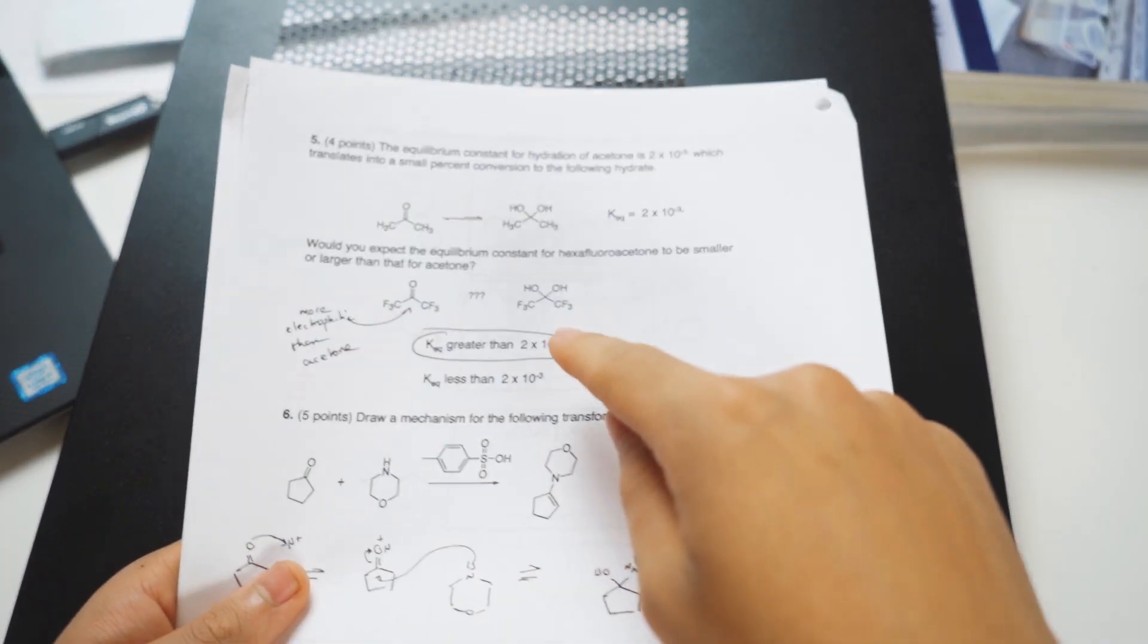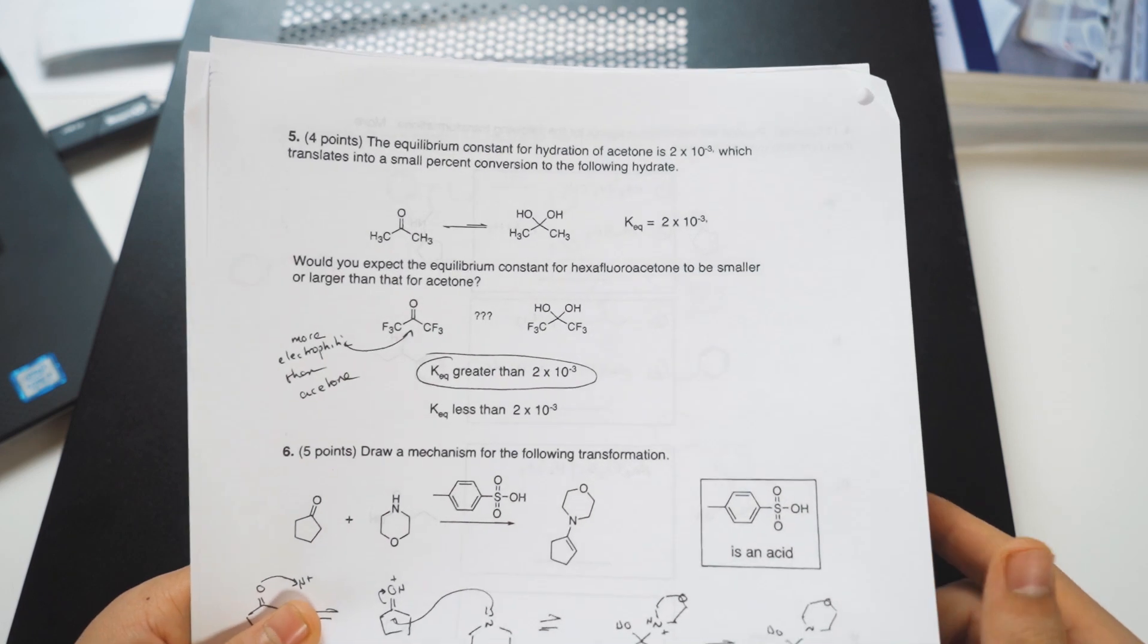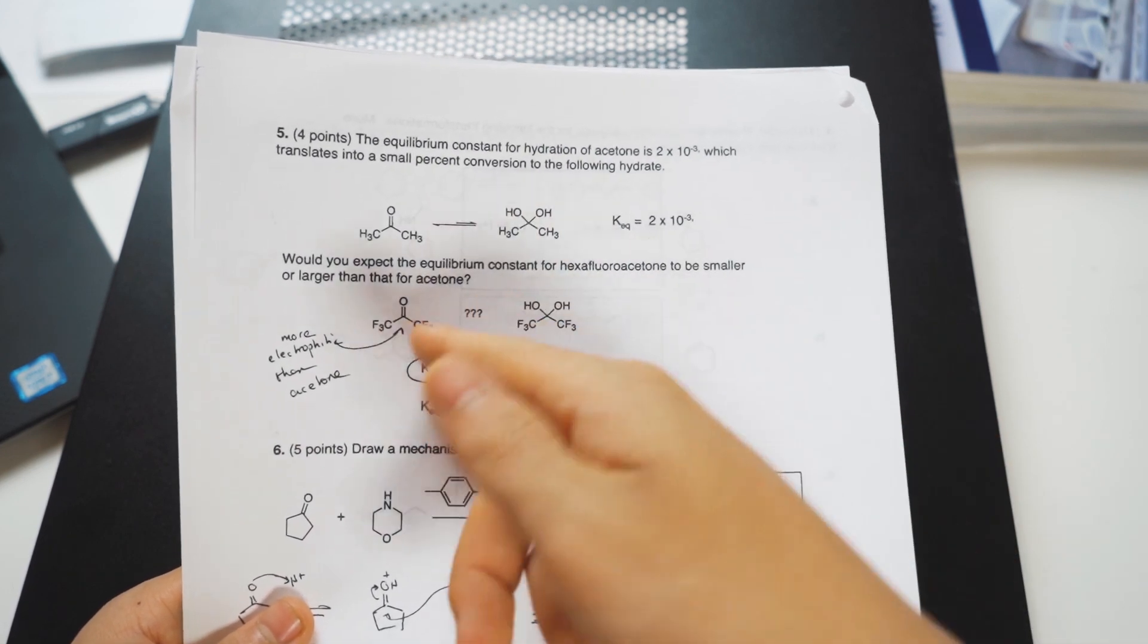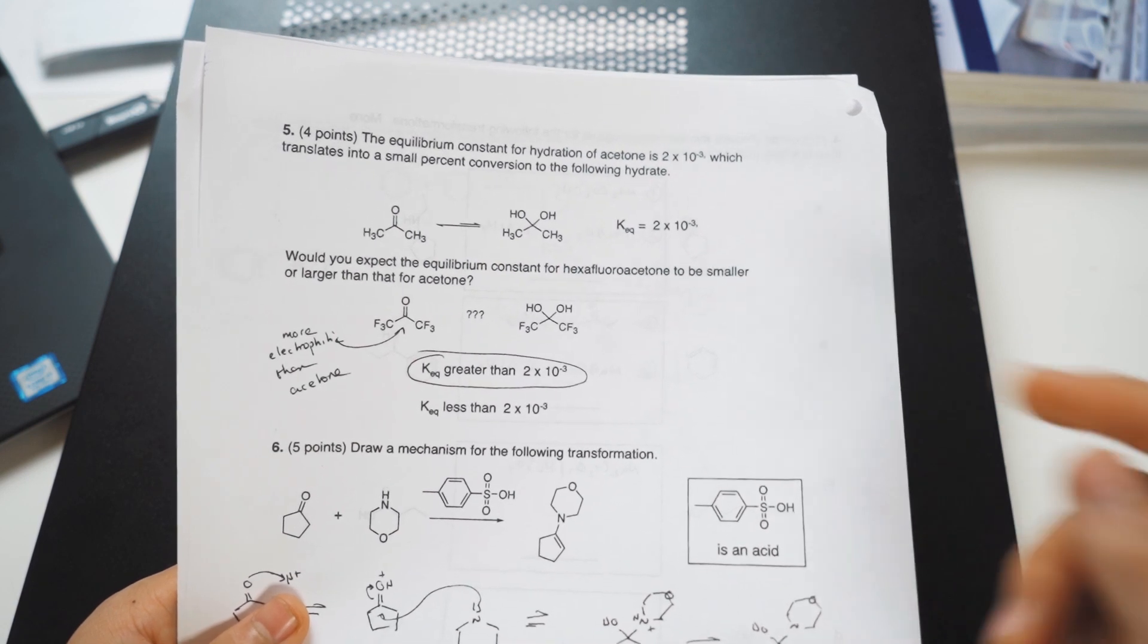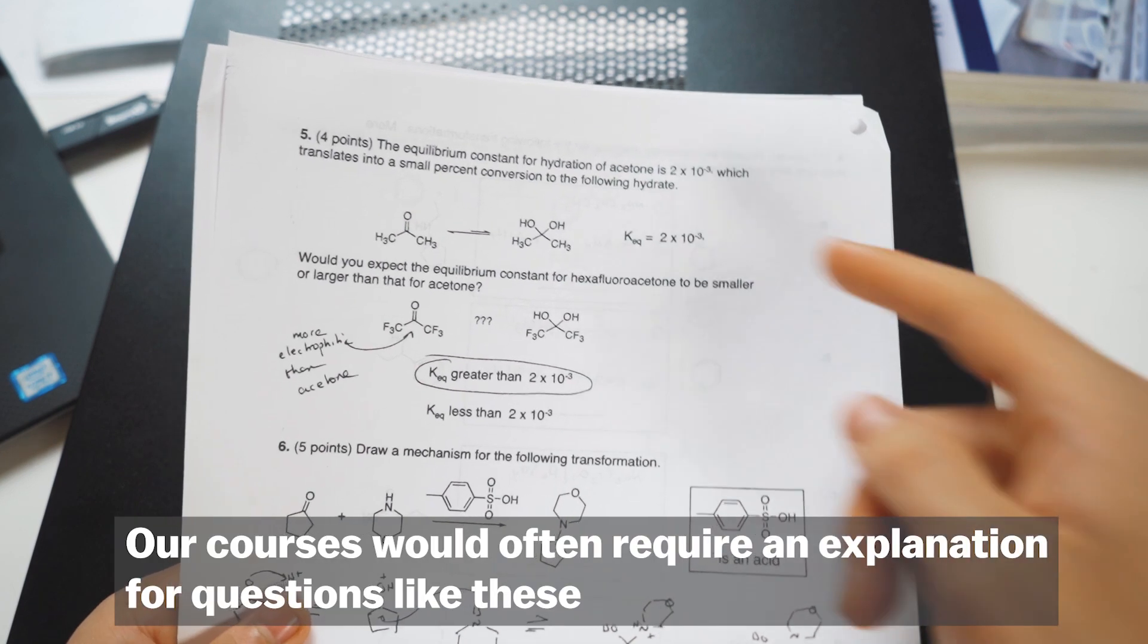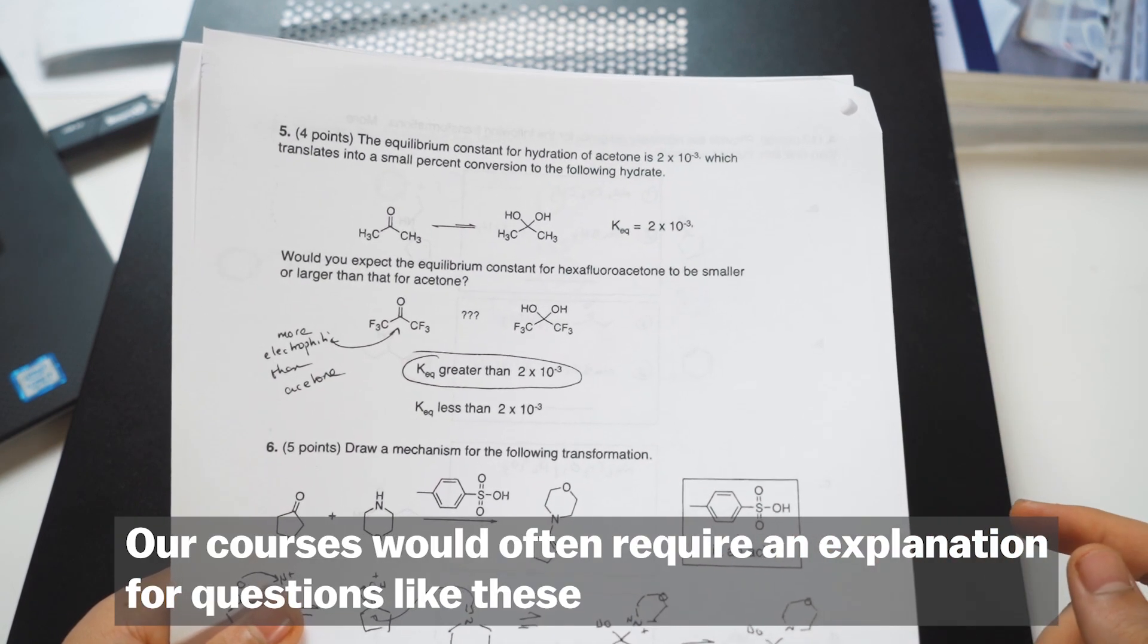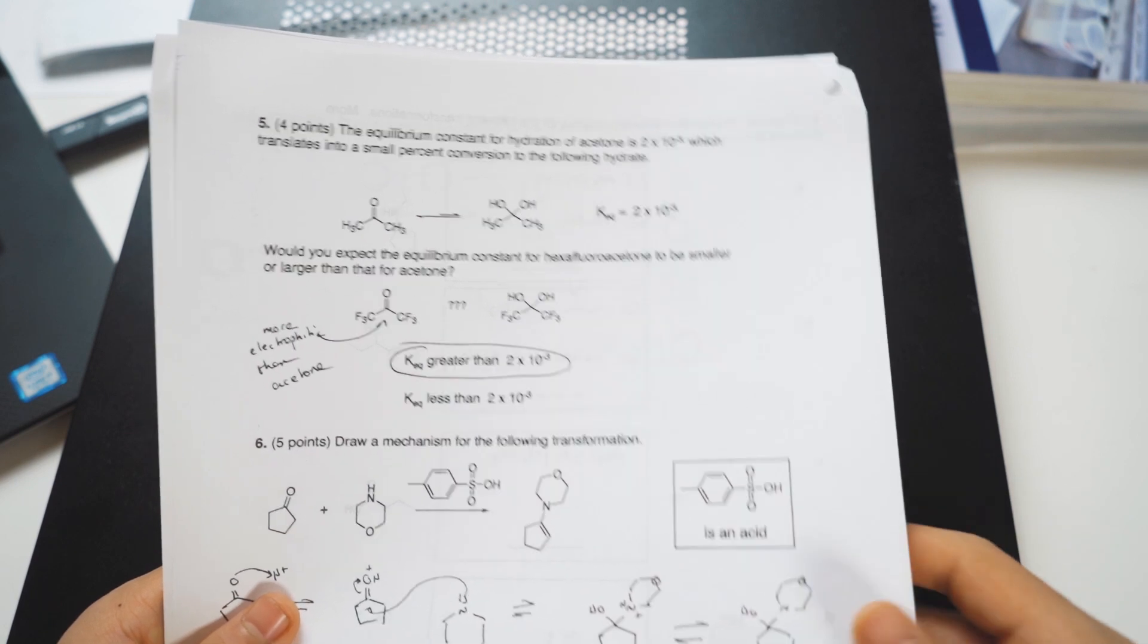Here, this requires you to understand some basic principles of chemistry, including electrophilicity and inductive withdrawing from the carbon. If you know that, it's just a pick or choose KEQ greater than or KEQ less than the original KEQ, and it's something very similar to what we would go over in our Orgo 2 classes.